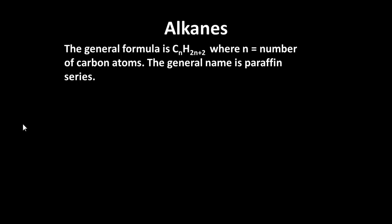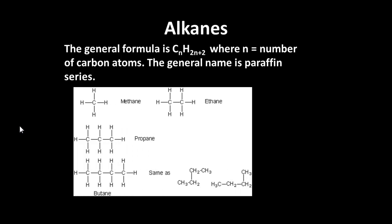Alkanes have a general formula CnH2n plus 2 where n is the number of carbon atoms. The general name given to all the alkanes is the paraffin series. You have one carbon atom it's methane CH4, two carbon atoms ethane C2H6 and then three carbon atoms propane, four carbon atoms butane. We've written the carbon atoms there as a straight chain but we could portray them in other ways but as long as they were all joined together in that way it would still be butane.